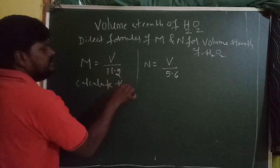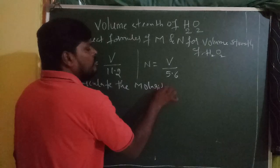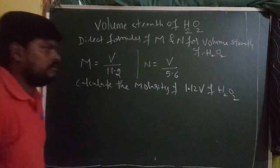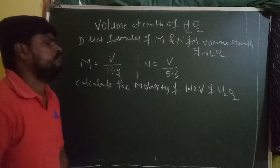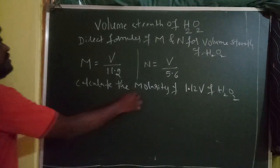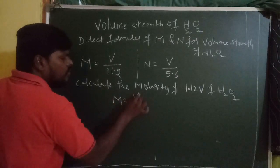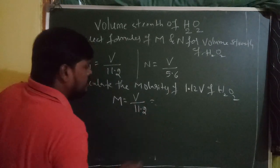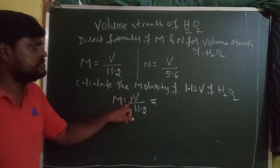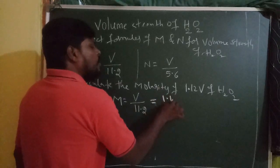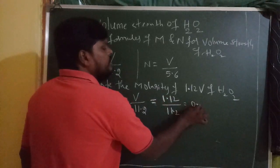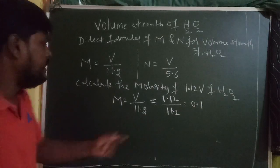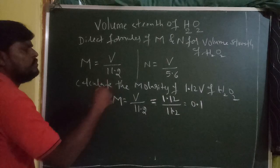Problem: Calculate the molarity of 1.12V H₂O₂. Using the formula: Molarity = Volume Strength / 11.2. Here the volume strength is 1.12, so substitute: 1.12 / 11.2 = 0.1. So the molarity of 1.12V H₂O₂ is 0.1 M.